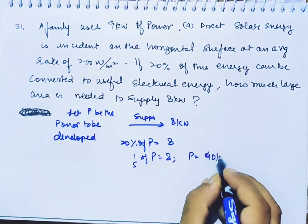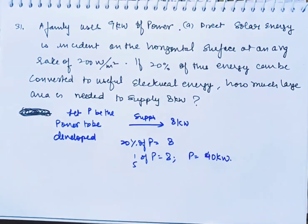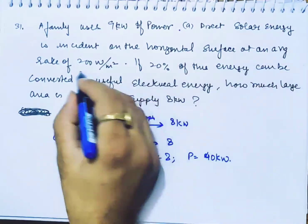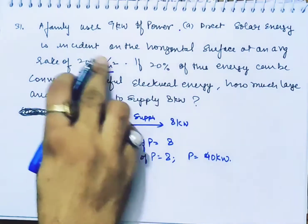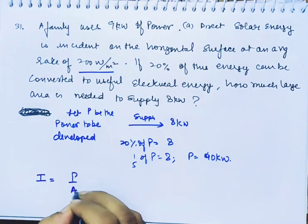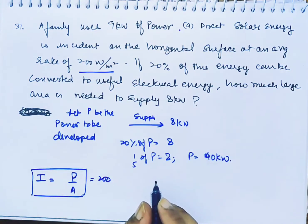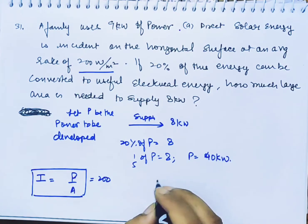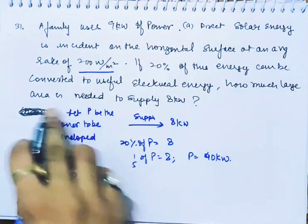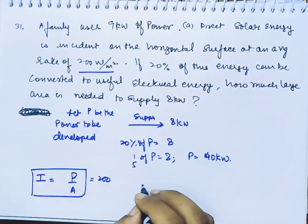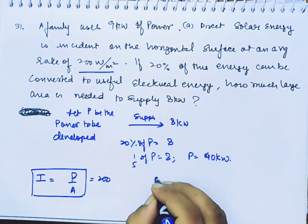P equals 40. So we need to develop 40 kilowatt. I need 40 kW. Power is 40.